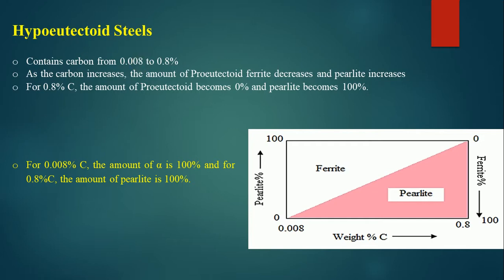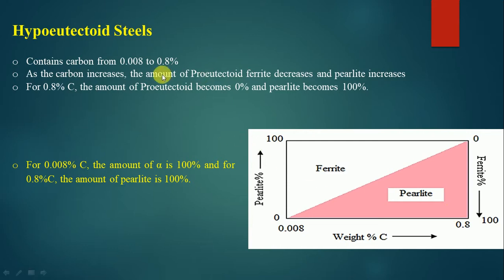As carbon increases, the amount of pro-eutectoid ferrite decreases and pearlite increases. The figure represents the percentage of pearlite and ferrite — as carbon percentage increases, pearlite increases whereas pro-eutectoid ferrite decreases. At 0.8 percent carbon, it is totally pearlitic: pro-eutectoid ferrite becomes 0% and pearlite becomes 100%.